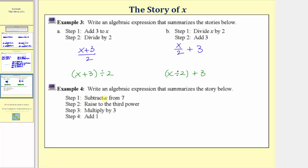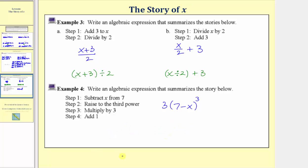For our last example, step one is to subtract x from seven, so we start with the expression seven minus x. Step two: take the result and raise to the third power, so we put the expression in parentheses and raise it to the third power. Step three: multiply by three — technically times three on the right, but more commonly written with three on the left, because by the commutative property of multiplication, the quantity seven minus x to the third times three equals three times the quantity seven minus x to the third. Finally, step four: take this result and add one, giving us plus one.